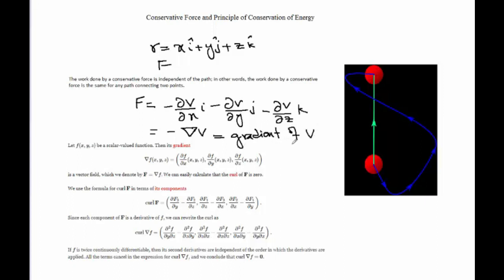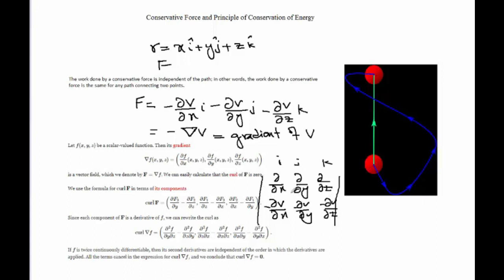Now the curl of the gradient of v is always zero. If we have a scalar variable function, the gradient of v equals the partial derivatives with respect to x, y, and z — giving partial v over partial x, partial v over partial y, and partial v over partial z. Each cross-product term becomes zero. This means that f is conservative only when the curl of f is equal to zero, because f equals the gradient of v. So the force f is conservative when its curl is equal to zero.